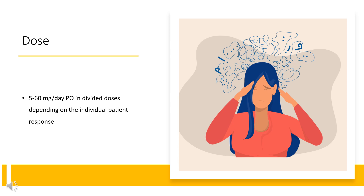Obesity: Indicated as a short-term adjunct in a weight reduction regimen based on caloric restriction for patients refractory to alternative therapy such as repeated diets, group programs, and other drugs. Usual dosage is up to 30 mg daily, taken in divided doses of 5 to 10 mg, 30 to 60 minutes before meals. Administer at the lowest effective dose and individually adjust dosage.